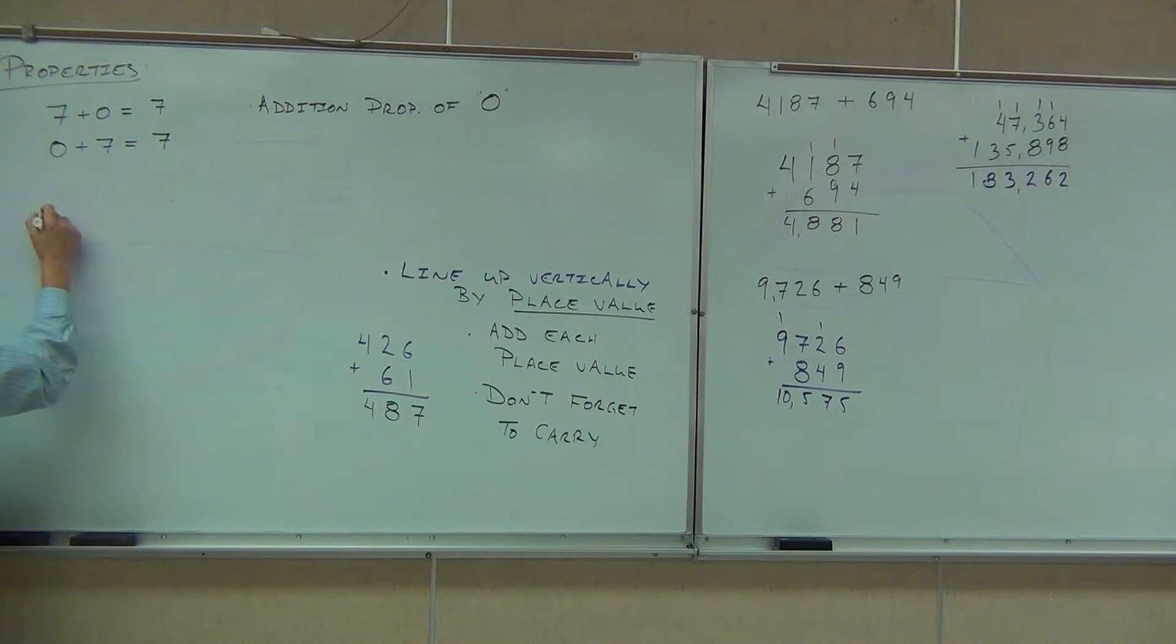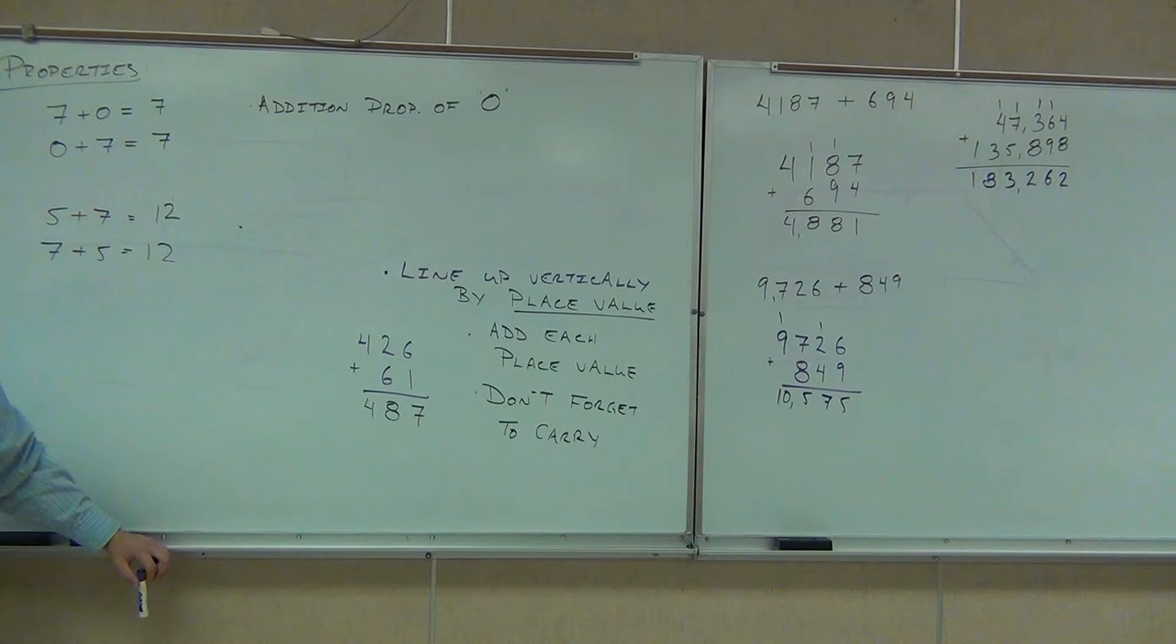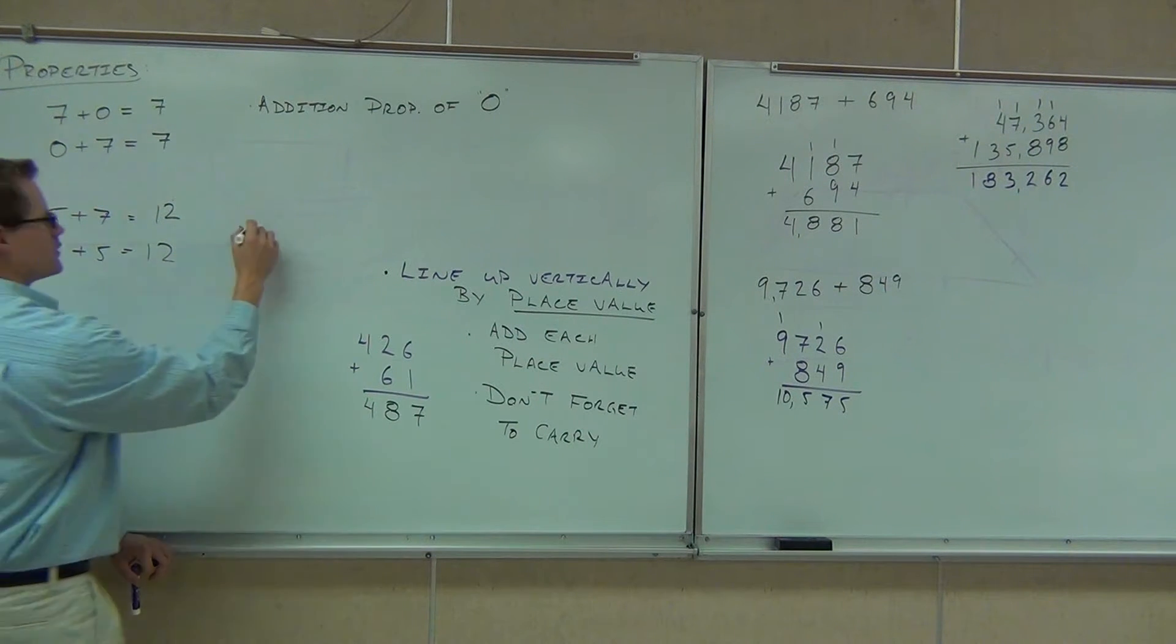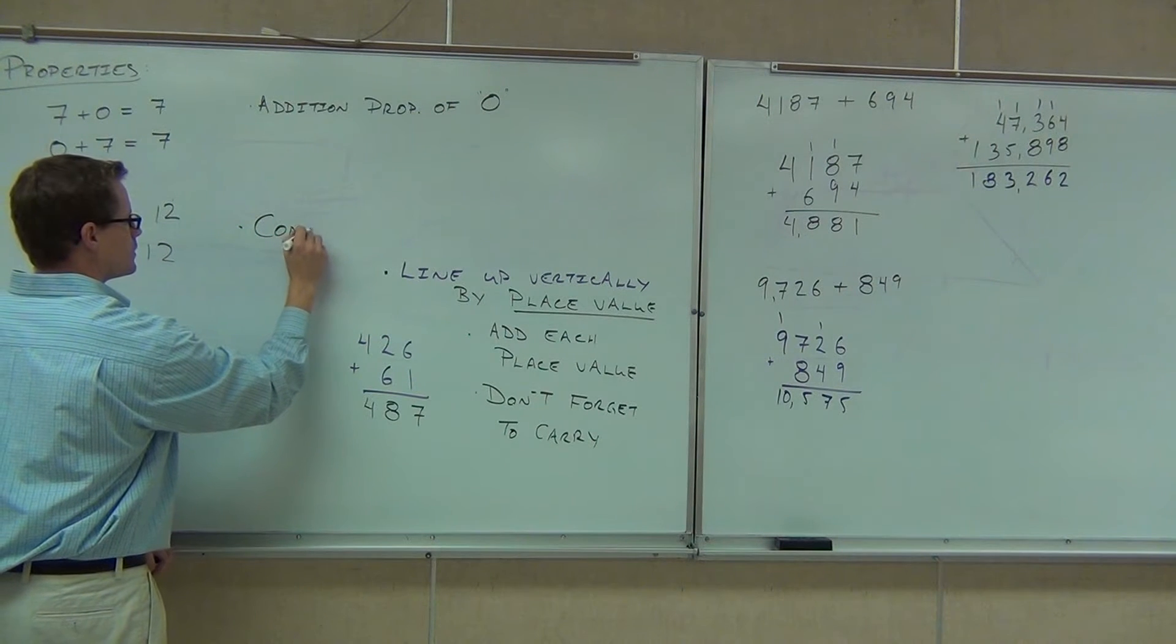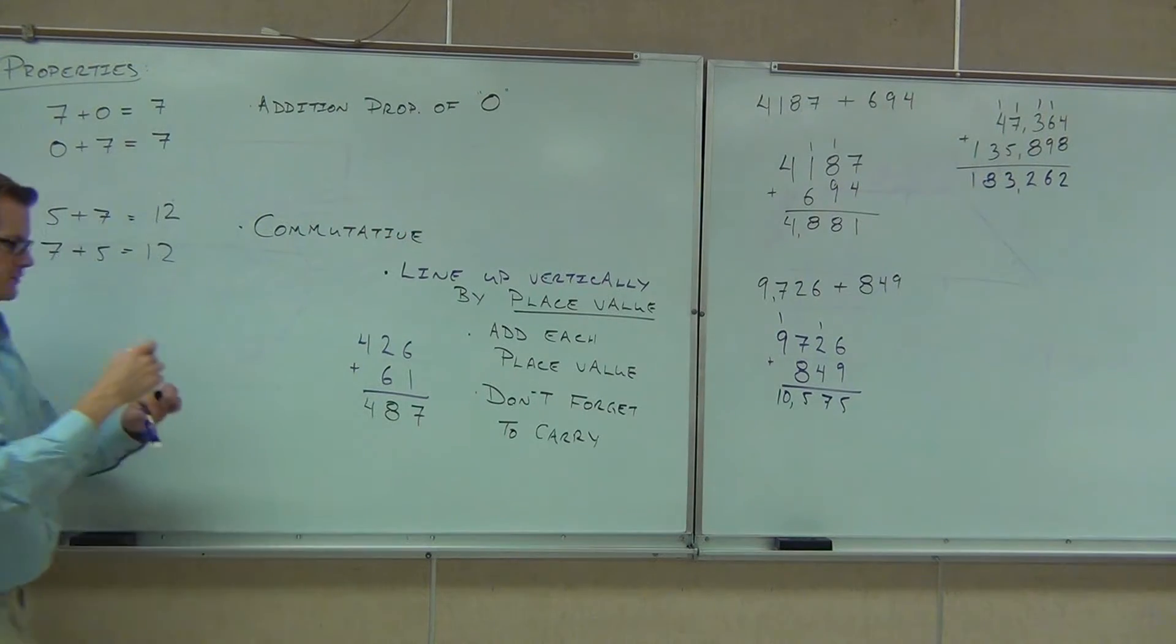Let me write that out for you. Okay. They both equal 12. It's called the commutative. Can you say commutative with me? One more time. Commutative. Good. Commutative.